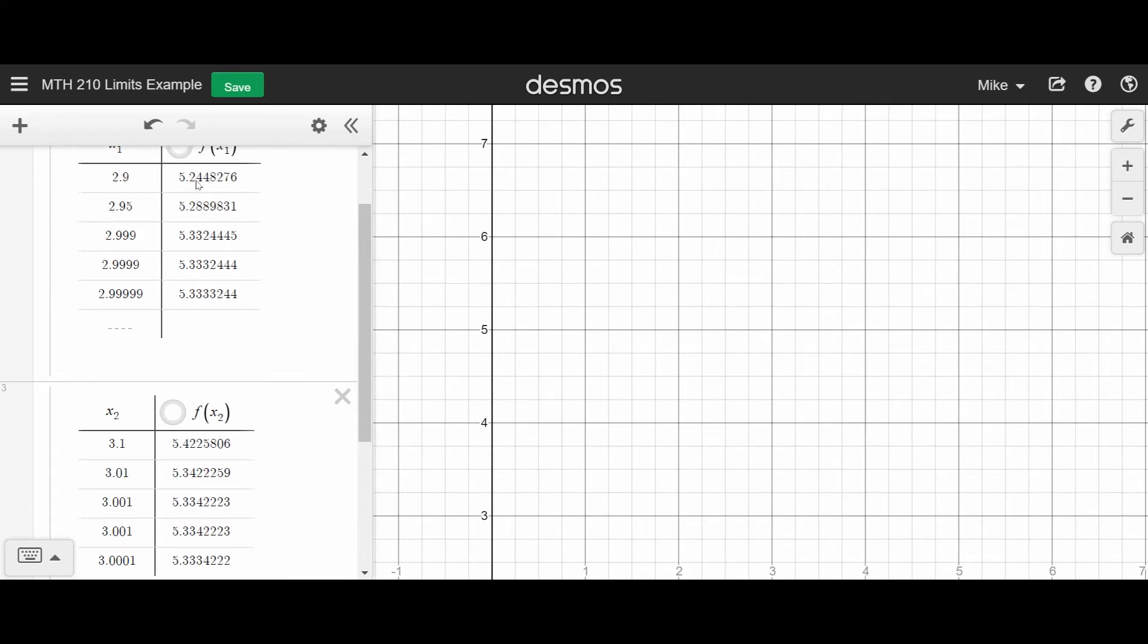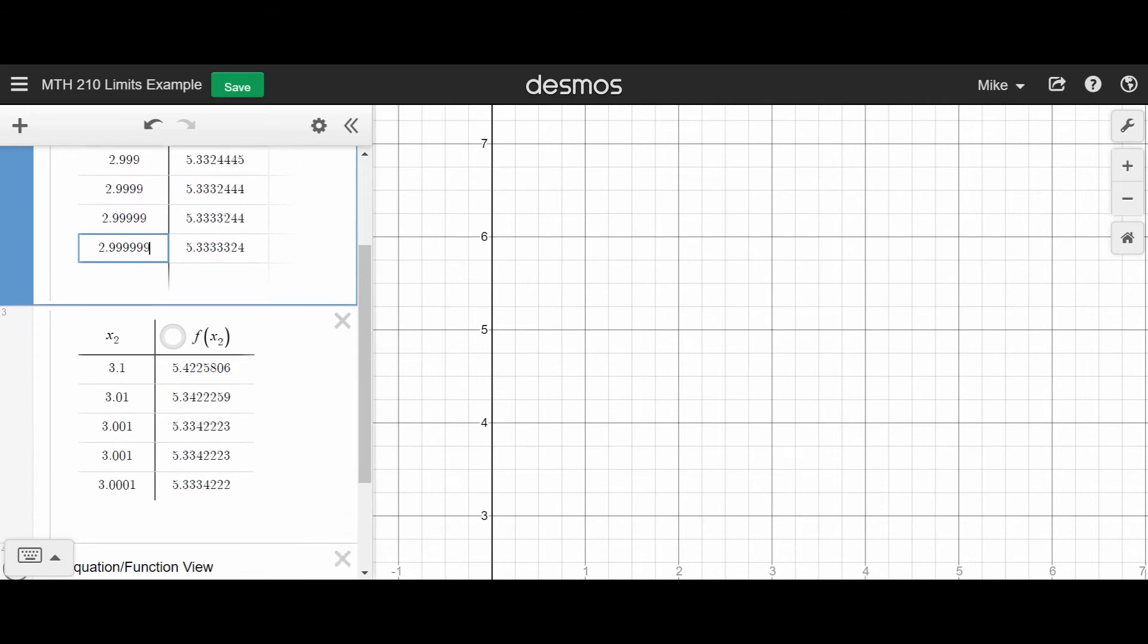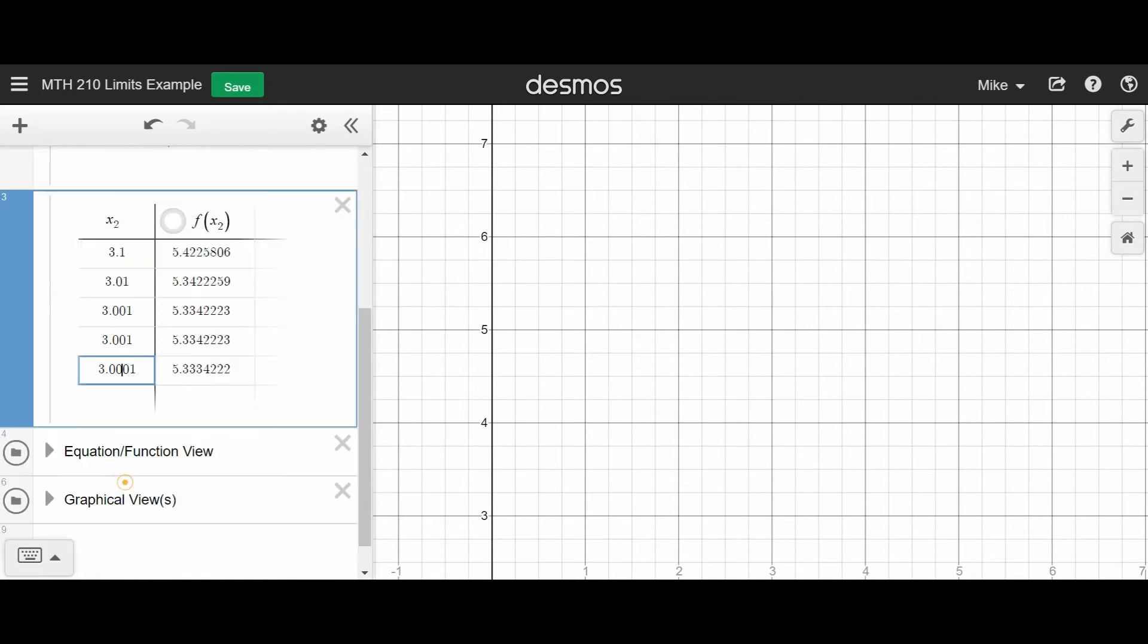So look what the y values are doing. This is about 5 and a quarter. This is a little bit larger, about 5.33. This is 5.333. And so on. You see these things are getting closer and closer to what looks like about 5.33. And if I get even closer, I can sort of do this interactively. I can just type another 9 and you can see when I add another 9, I get closer and closer to the value 5.333. And the same is true if I add more zeros to this thing. You can see that my y value is getting closer and closer to the number 5.33.